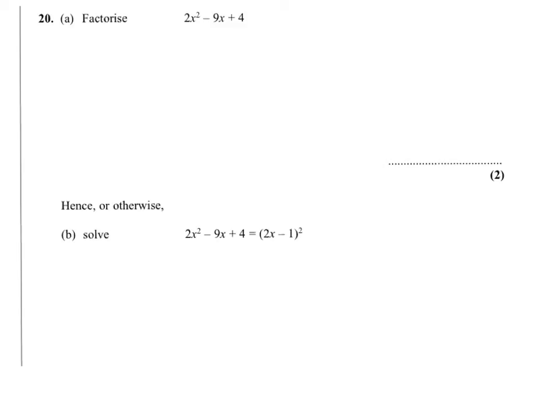I'll start off by factorizing 2x squared minus 9x plus 4. We're going to need a 2x on the inside of the first factor and x on the other side.